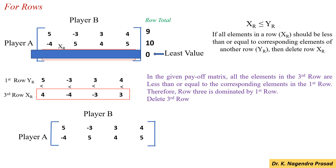So now, the payoff matrix has player A with only 2 strategies. We have deleted the third row, that is the third strategy for player A. And for player B, we have not deleted any columns. So, player B still has 4 strategies.